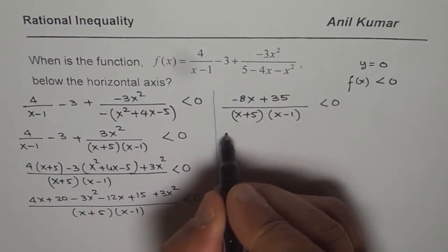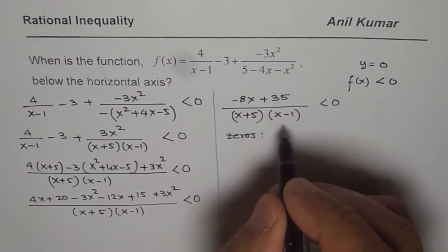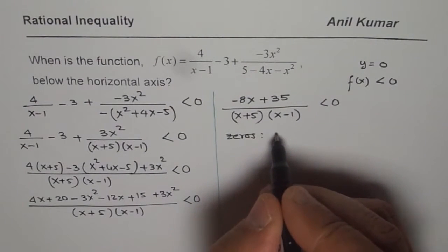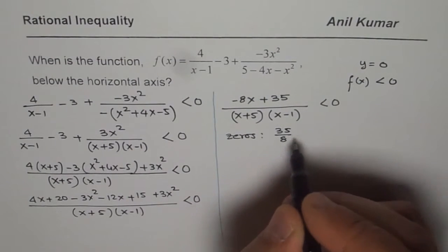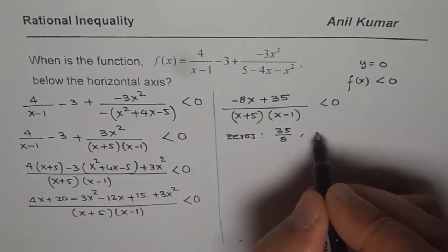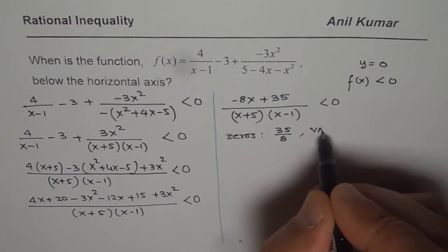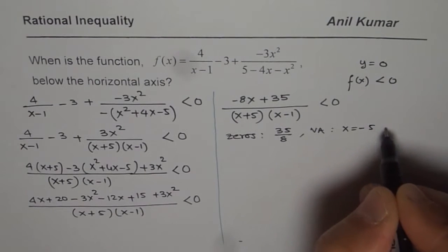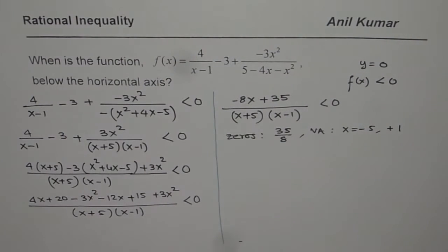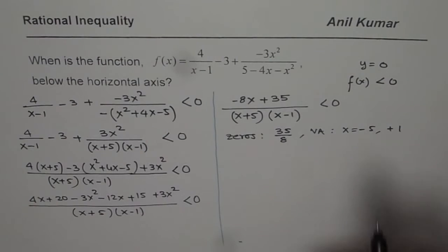So what we have here is zeros will be, for the numerator, at 35 over 8. And zeros for the denominator will be, we can say vertical asymptotes if you want to, will be at x equals minus 5 and at plus 1. So we will make a table of values.